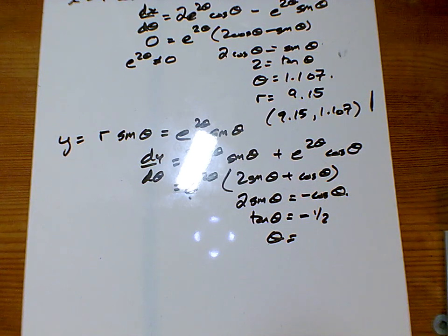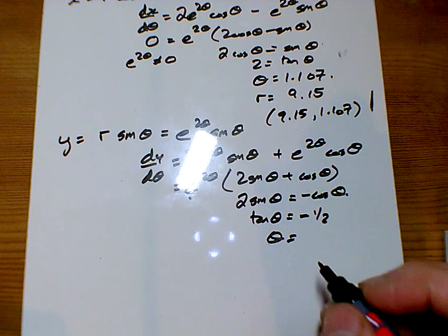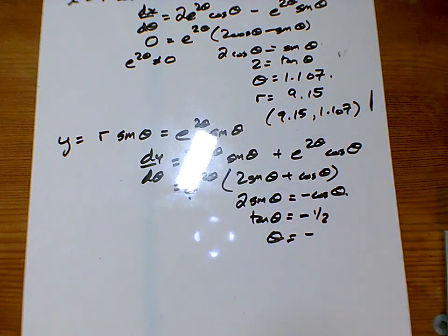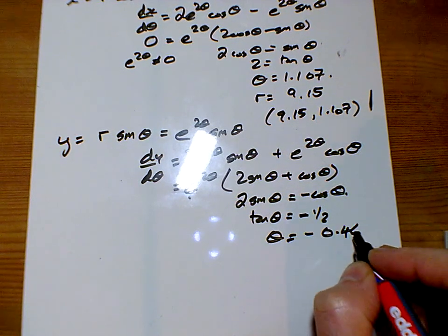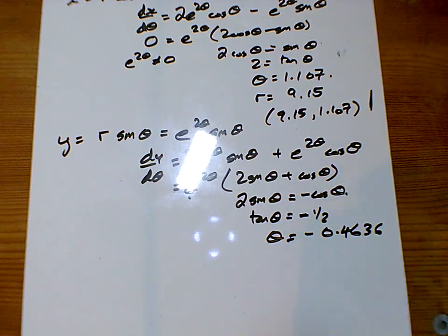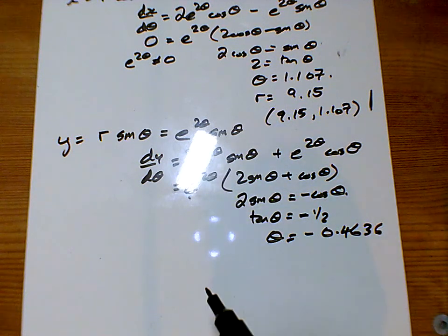And so the inverse tan of minus a half is minus 0.4636. Now I paused there because I'm a little bit worried about that one. But in the actual question...